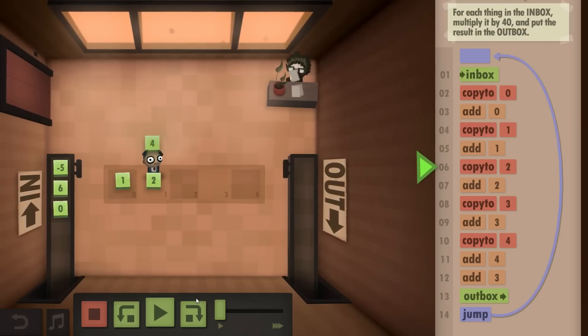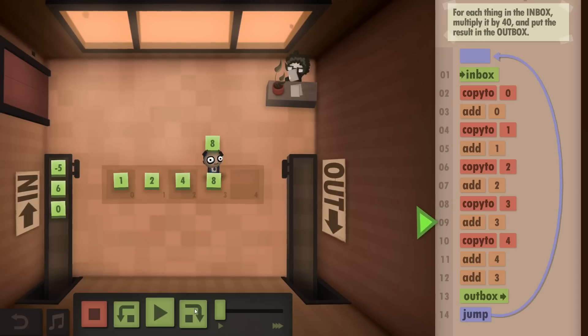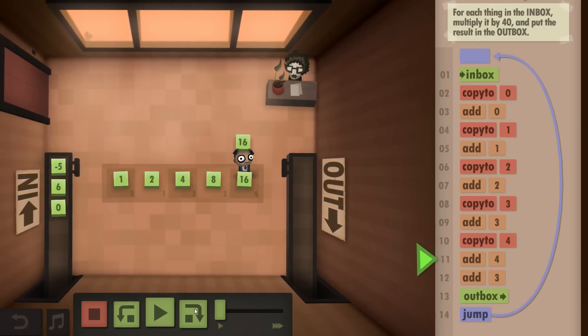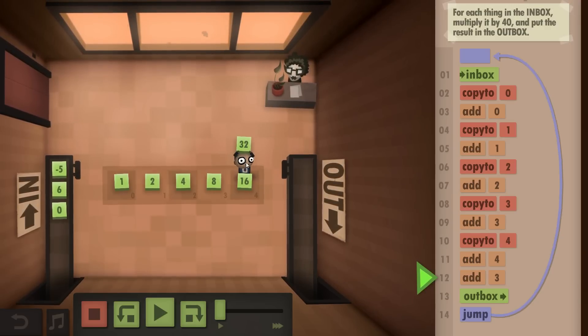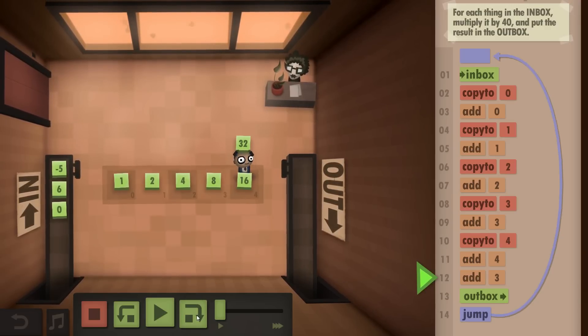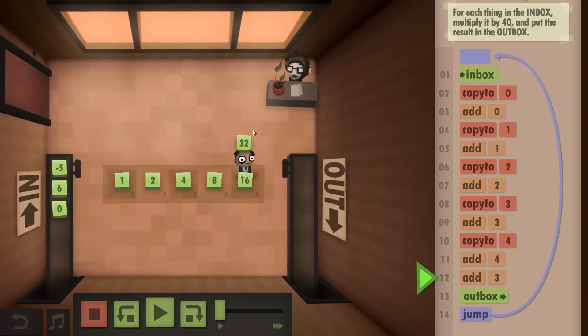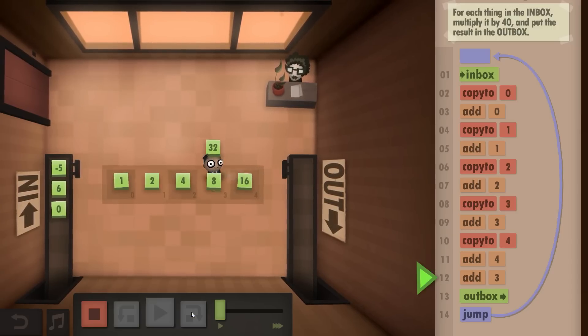Then we double that again, get the times 4, we double that again, get the times 8, we double that again, get the times 16, then we double that again, get the times 32, and then since we already have the times 8 and the times 32, we can just go back to the times 8 value and add that as well.